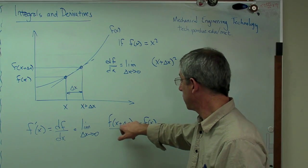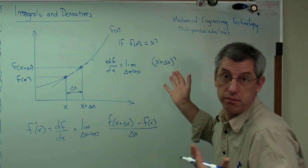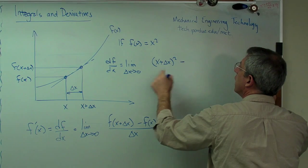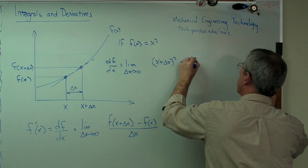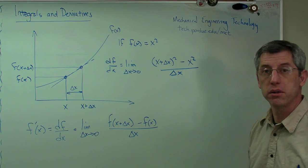Remember, function's just a black box. You stuff something in, you get something out. So I stuff that in, I get that out. Transfer function, I guess. Minus f of x. Well, that's just x squared over delta x. So far, so good.